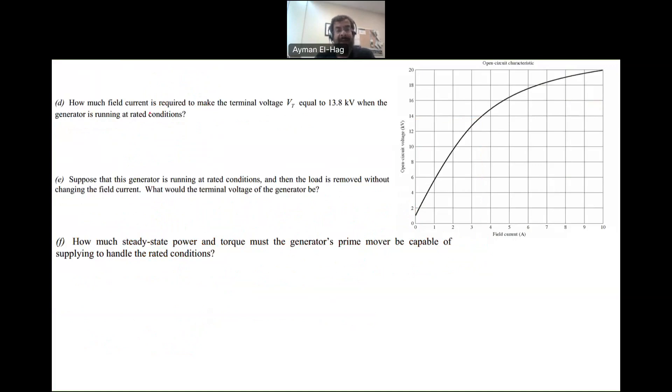Part D: How much field current is required to make Vt equal to 13.8 kilovolt when the generator is running at rated conditions? This equals 13.8 kV over root 3 for the phase voltage in Y connection. The question is, what should Ea be to maintain this? We find Ea first, then find If from the characteristic between If and Ea. We already calculated Ea from the previous part, which equals 11.544 kV.